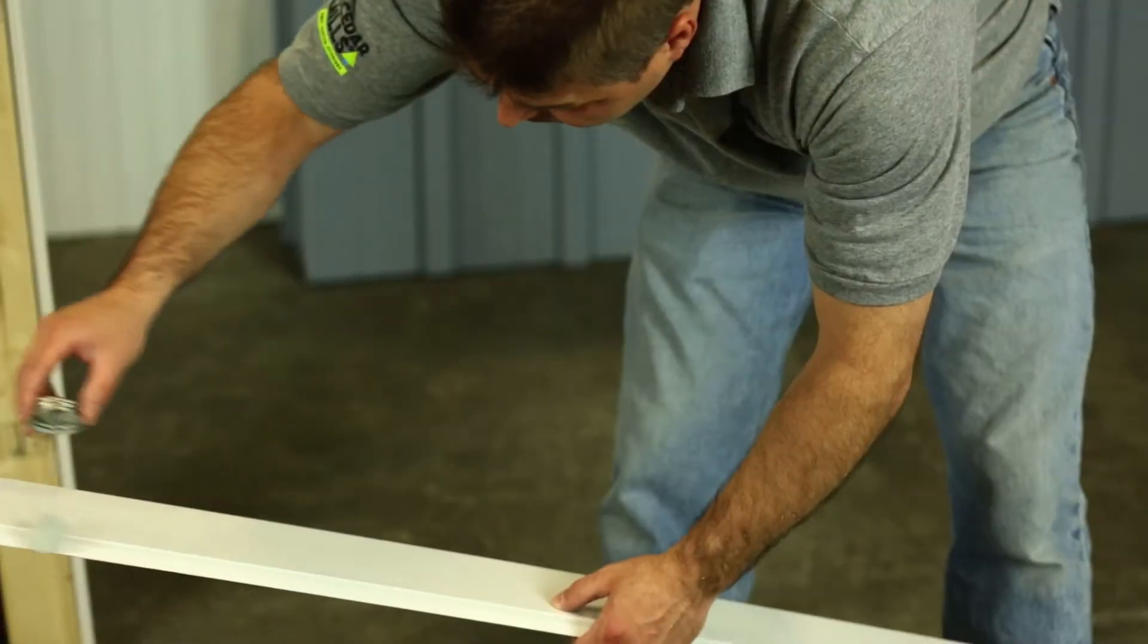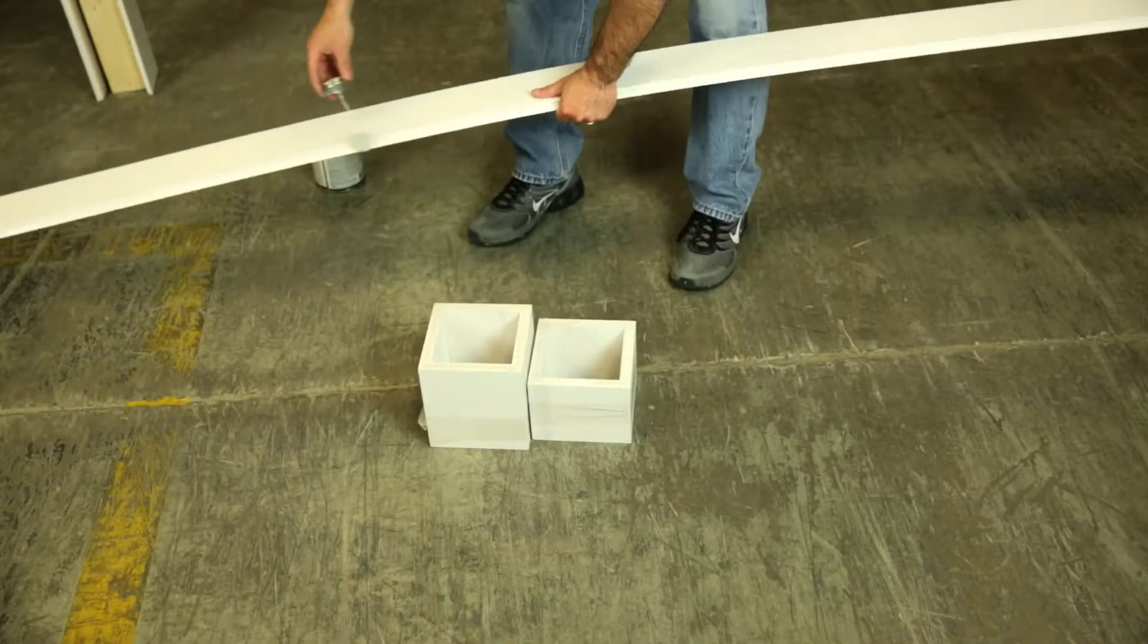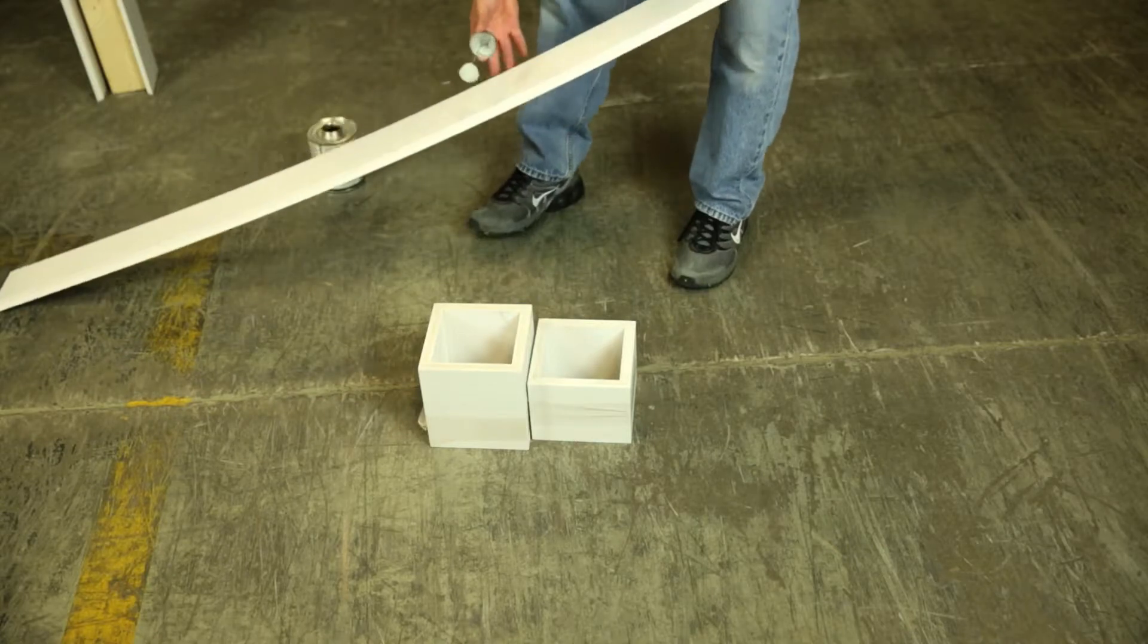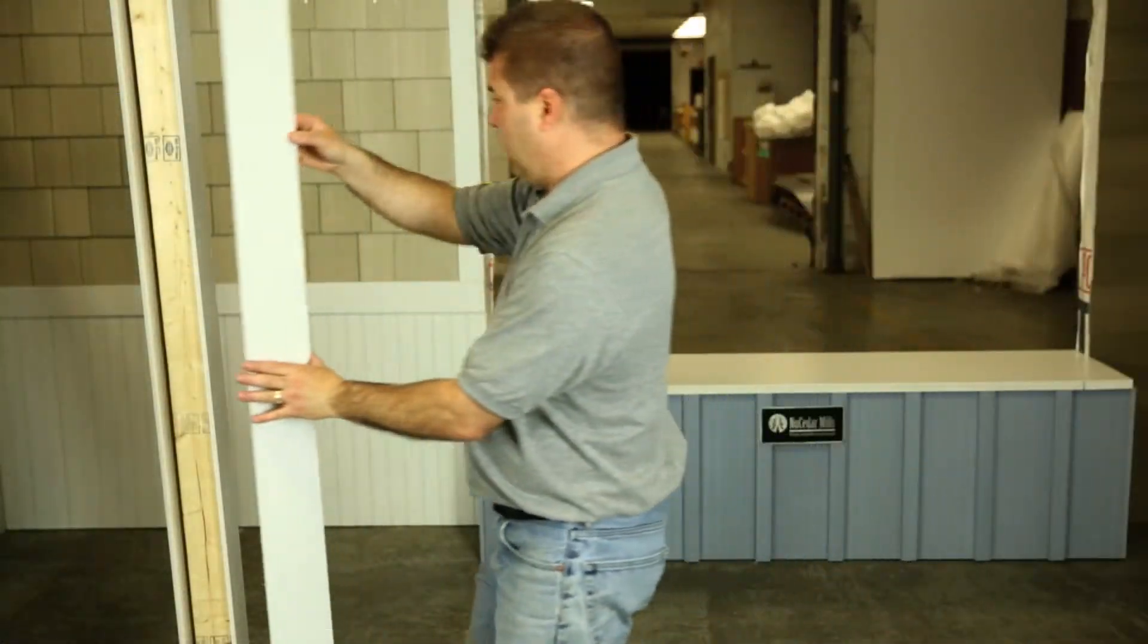We recommend using PVC cement and apply it on the milled miter locks of the one piece. Once that is applied, snap it into place.